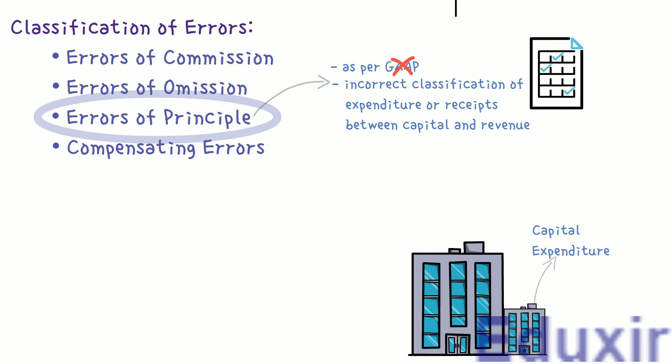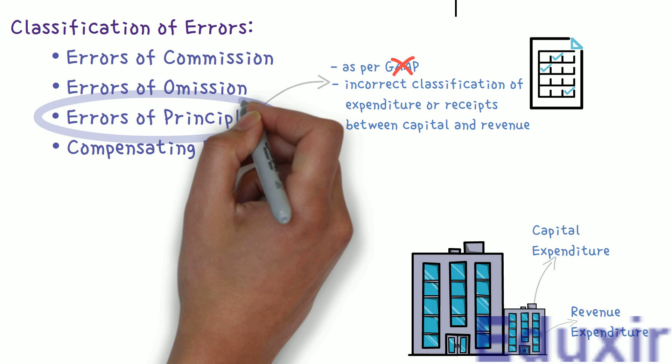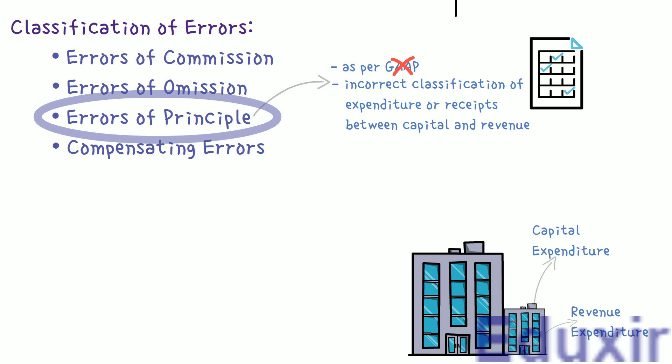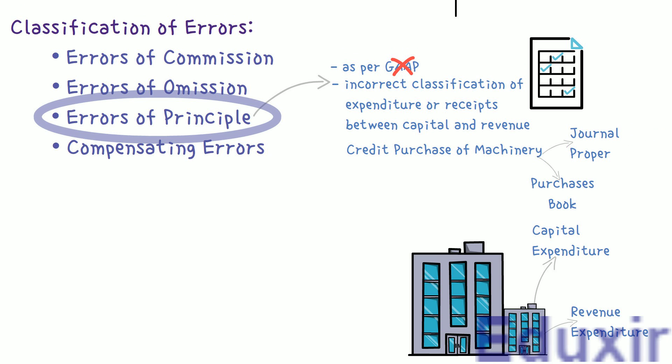For example, consider the case wherein a firm decided to expand its building facility. The amount spent on additions to the building should be treated as capital expenditure and debited to the assets account. Instead, if it is debited to the maintenance or repairs account, it will be treated as revenue expenditure — this is an error of principle, because assets are classified as expenses. Another example is the purchase of machinery recorded in the purchase book instead of the journal proper. We should record only purchase of goods on credit in the purchase book.